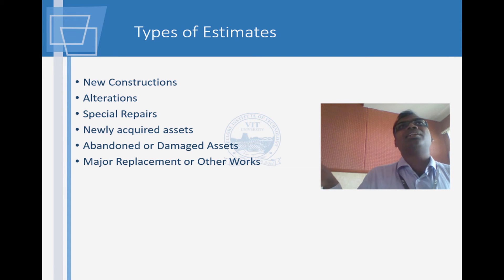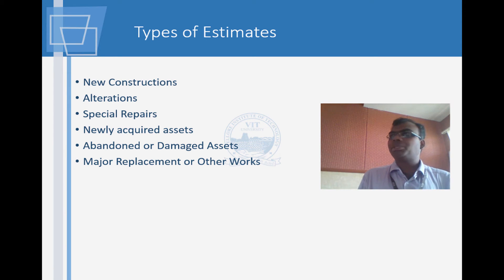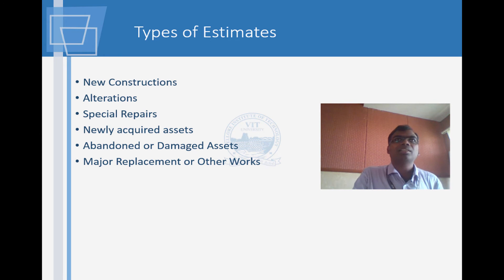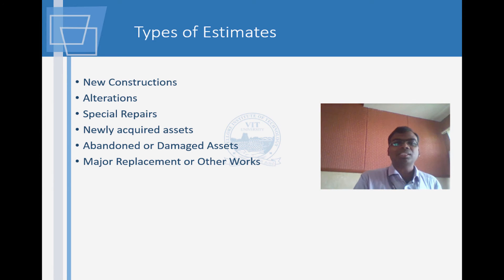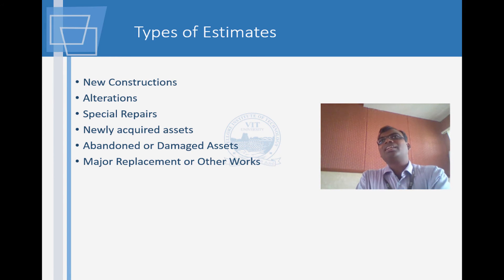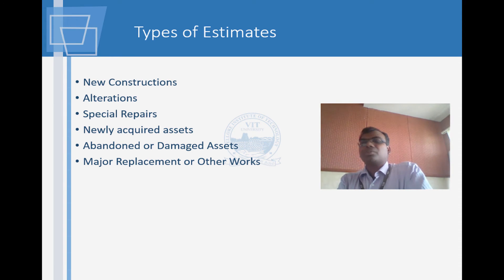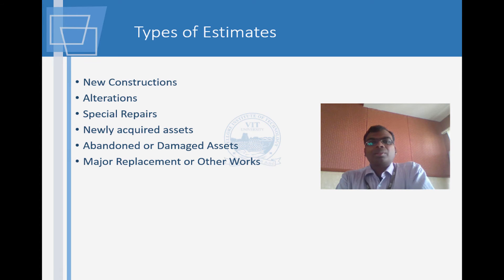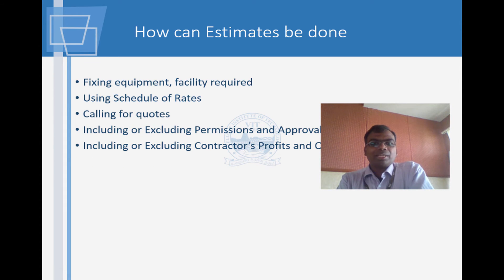The types of estimates and where estimates are done come right from the CPWD Works Manual 2014, within the first five pages. These are the areas where you will be doing estimates: new constructions, alterations, and almost everything listed in that section is what you'll ever do in your career. Almost everything requires an estimate, and every item you execute before starting will also require a sanction.